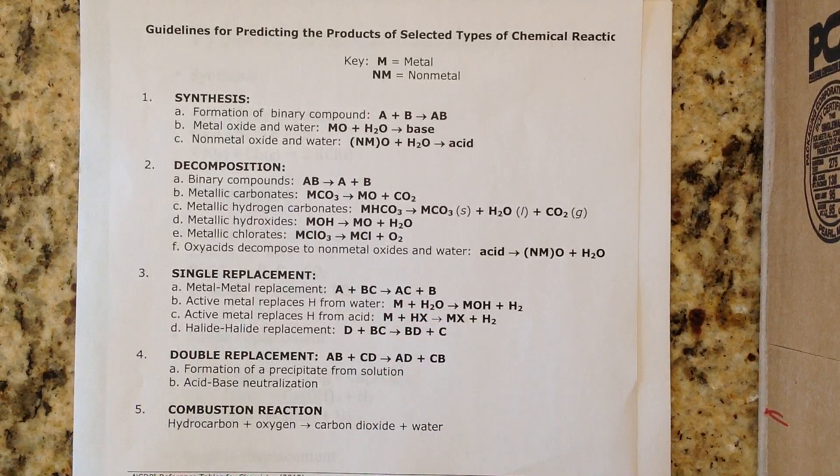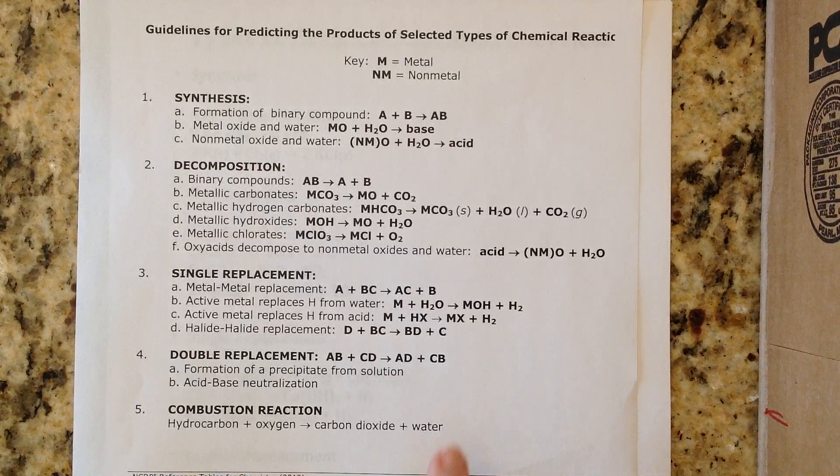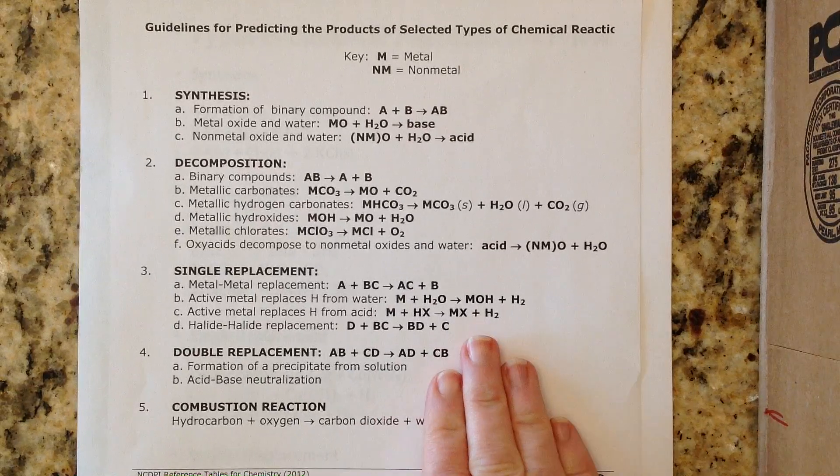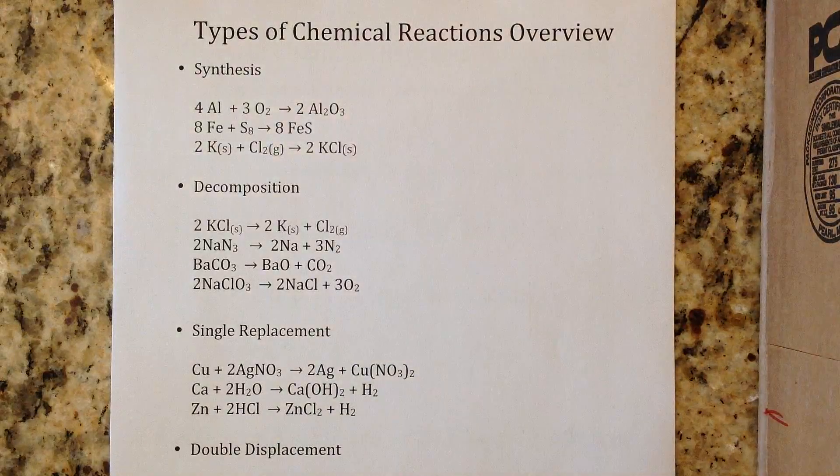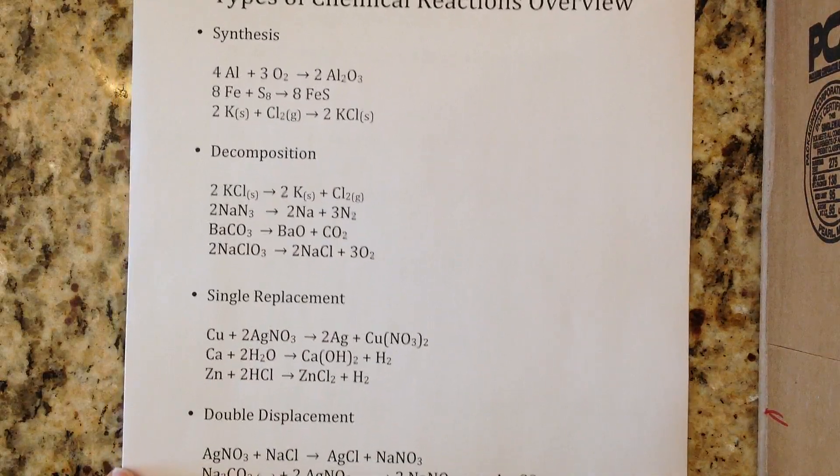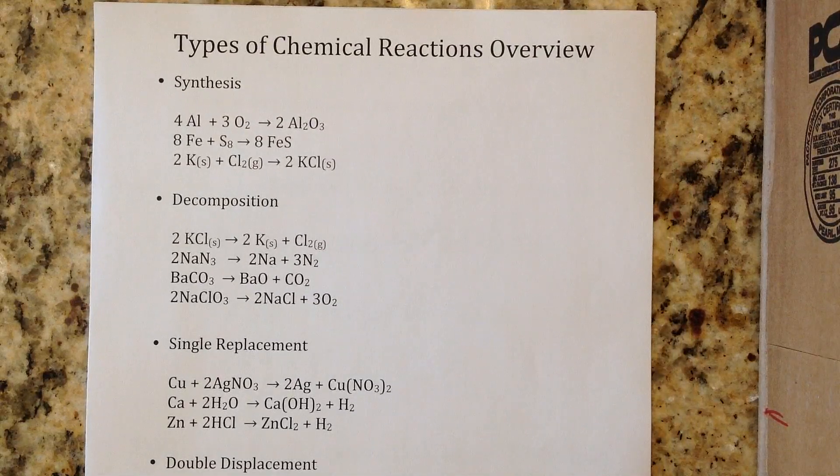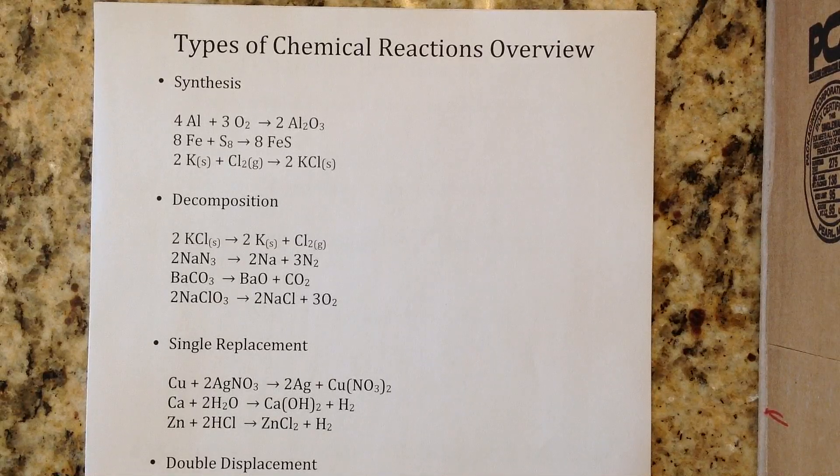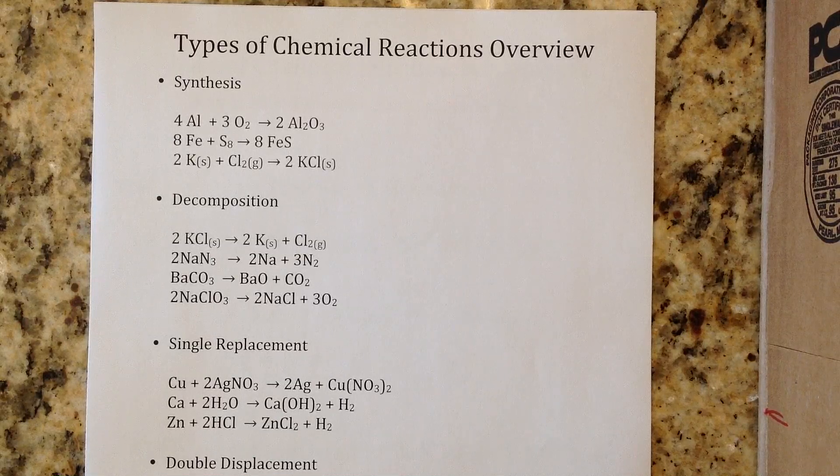My students or any student in North Carolina, you do have a reference table packet that has this information in it. The rest of you could find this easily online. If you're in college you're probably going to have to have this memorized - typically they're not going to give you all this. I've got the five main types of reactions here. Today I'm just going to point out some clues to help you understand what type of reaction you're looking at.